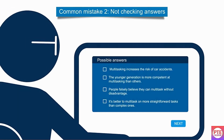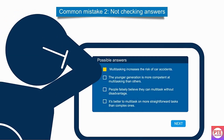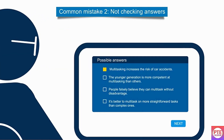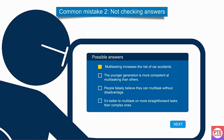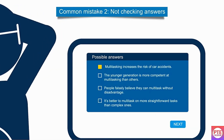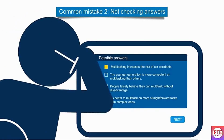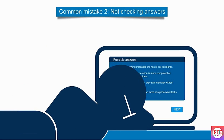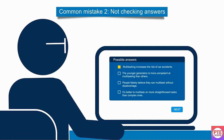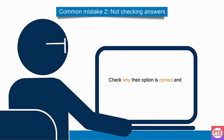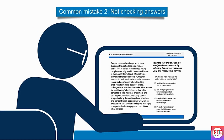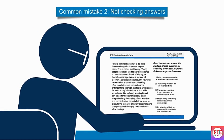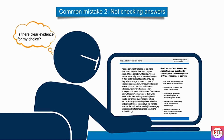The test taker has selected an answer but is unsure if it's correct. What should they do? Click next and move on, check why their option is correct, check why other options are incorrect, or read the whole text again? The test taker should check why their option is correct and why other options are incorrect. This is an effective way to test any answer — ask yourself: is there clear evidence for my choice? Am I able to eliminate the other options?